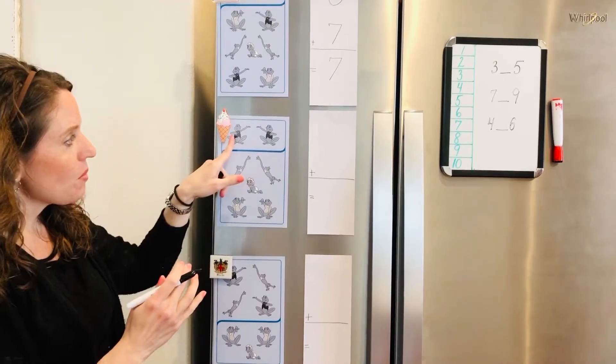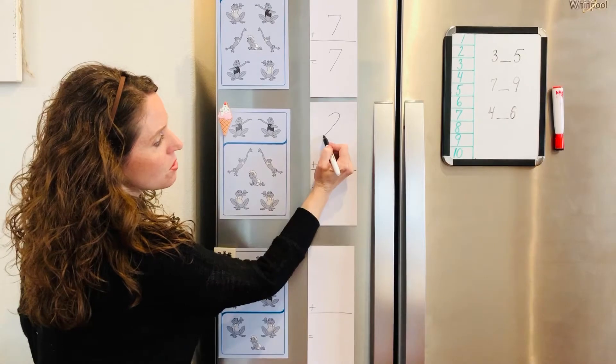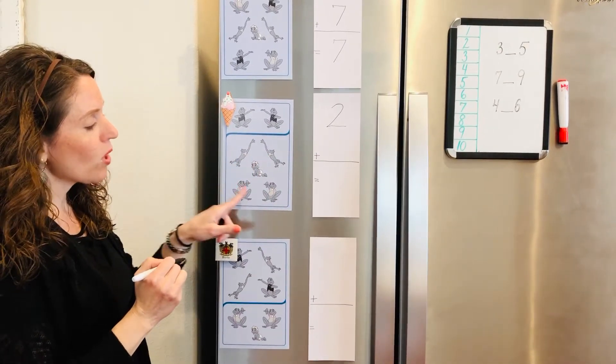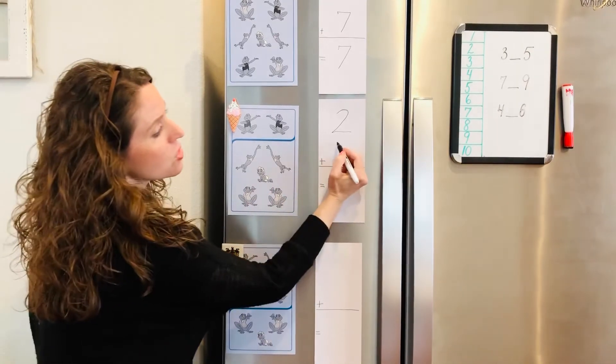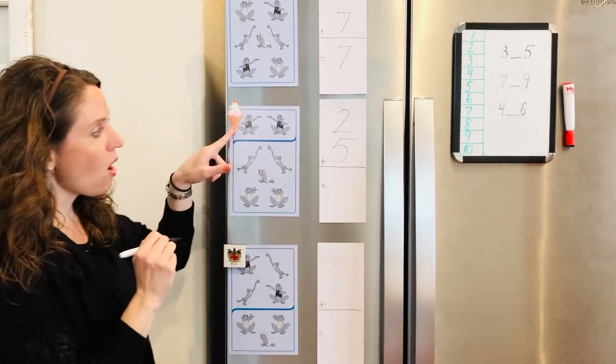Let's look at the next one. We have one, two frogs. I'm going to write number two. Plus one, two, three, four, five frogs. Two frogs plus five frogs. Let's do all of them now.